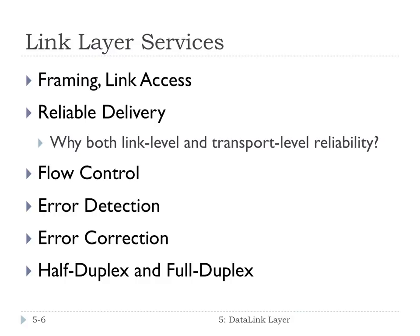Another service the link layer may provide is half duplex versus full duplex. Half duplex means that nodes at both ends of the link can transmit, but not at the same time. Full duplex means you can send in either direction simultaneously. Half duplex means you can only send one direction at a time, but you can send in both directions.